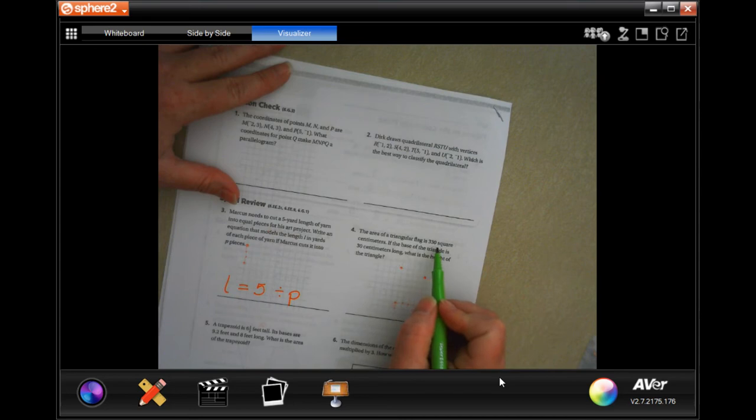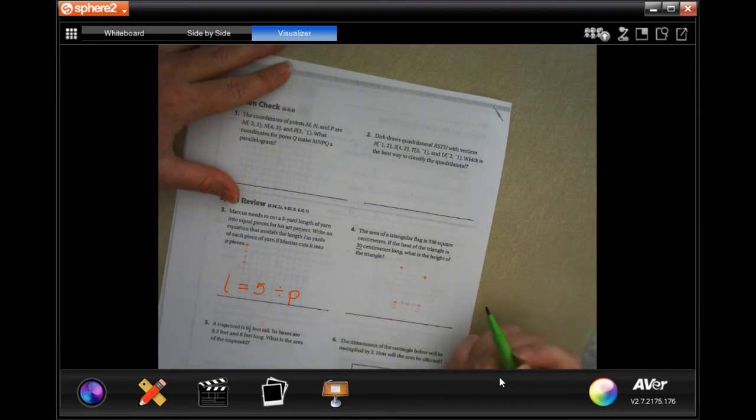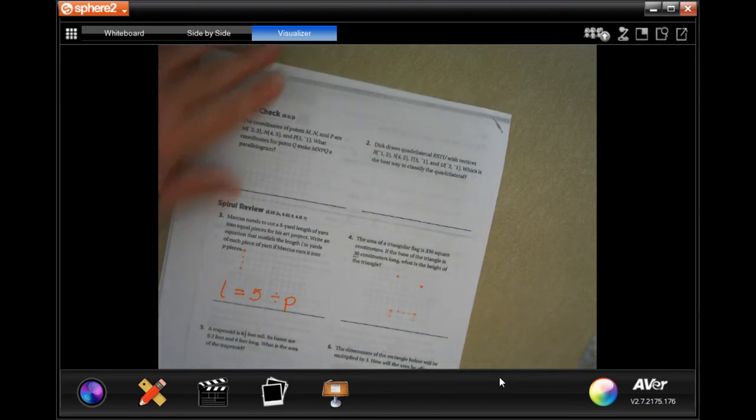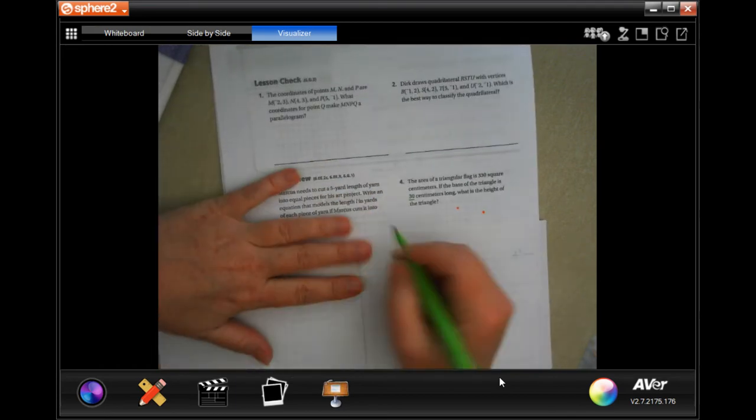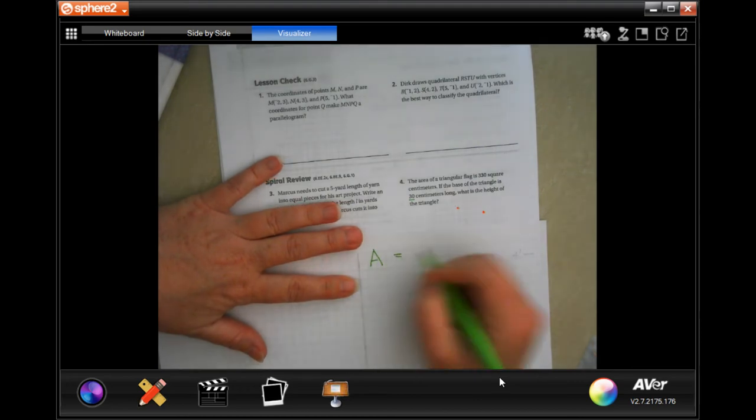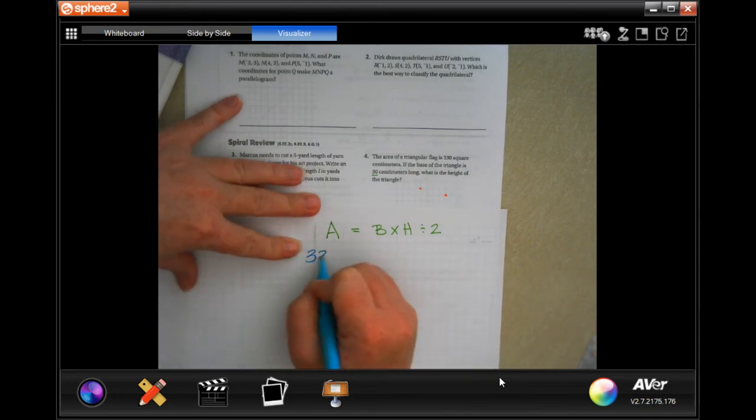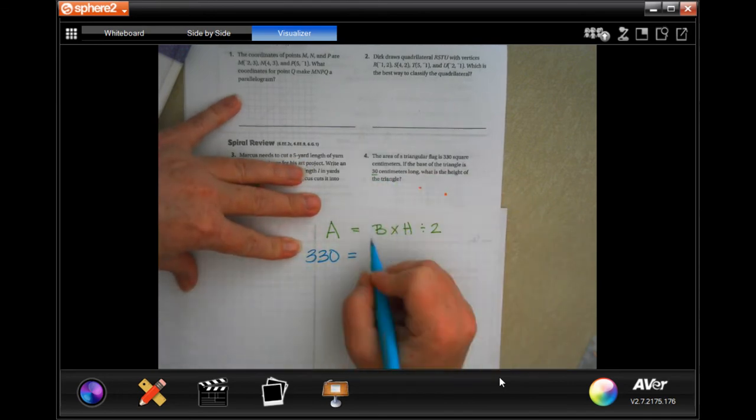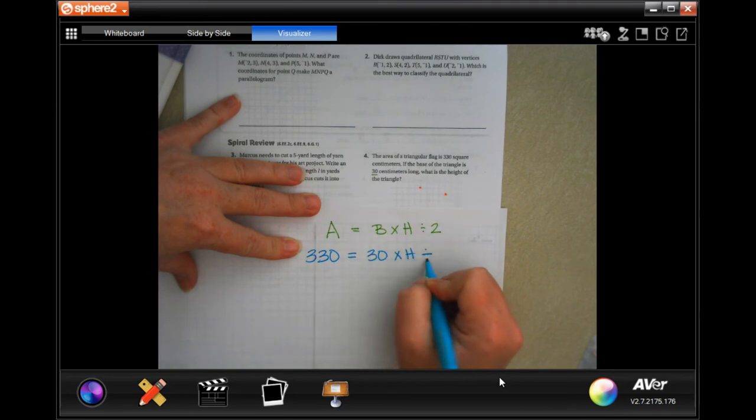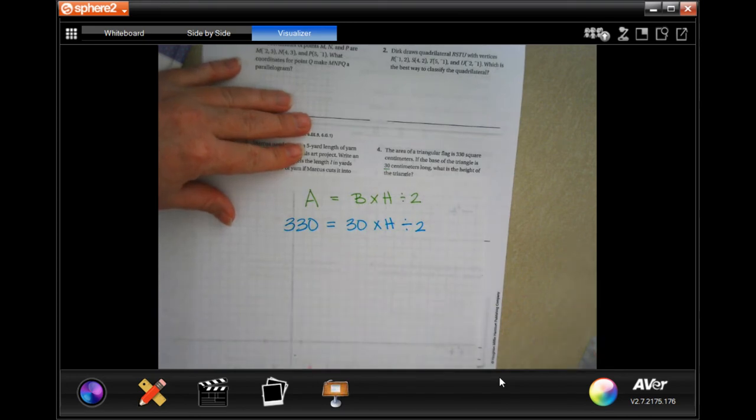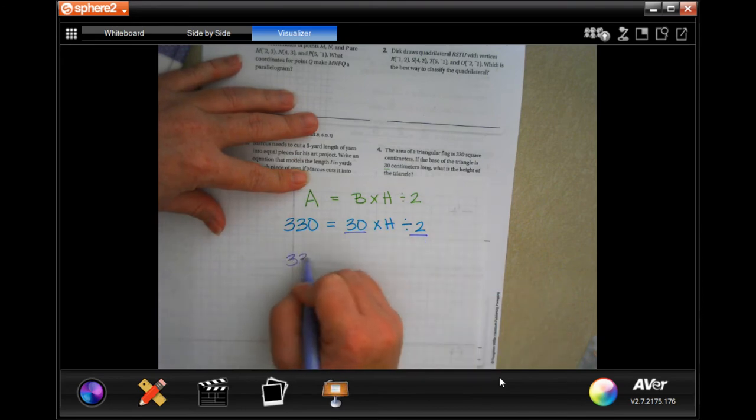All right. The area of a triangular flag is 330 square centimeters. If the base of the triangle is 30 centimeters, what's the height of the triangle? All right, well let's find out. Okay? I'm going to use the back of one of these. That'll work just fine. Okay? So the area of a triangle is base times height divided by 2. Okay? I'm going to fill in the numbers that it gave me. The area is 330 and the base is 30. Okay? Nothing else changed. Okay? So now I'm going to combine my like terms. Well, I know that if I divide 30 by 2, I get 15. So 330 equals 15 times h.